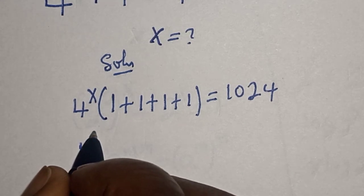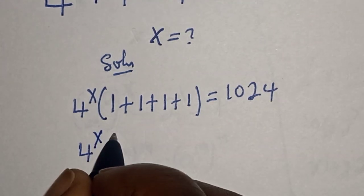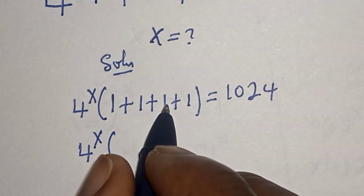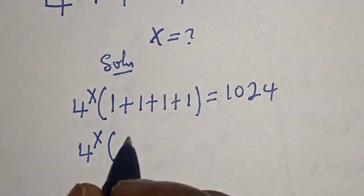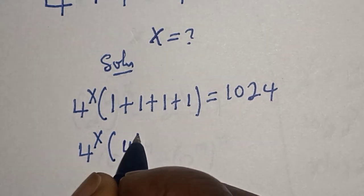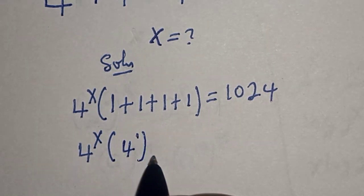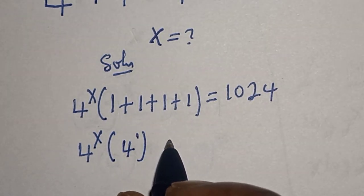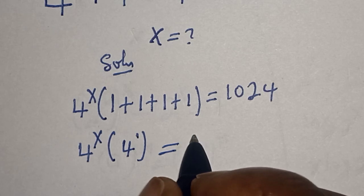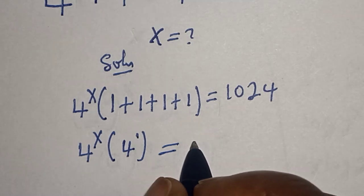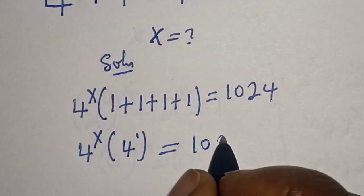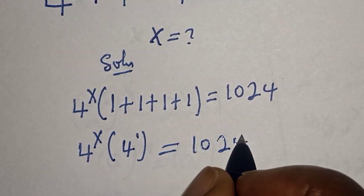Then, 4 to the power of s, bracket 1 plus 1 is 2, plus 1 is 3, plus 1 is 4. So 4 to the power of s, multiplied by 4 to the power of 1, is equal to 1024.